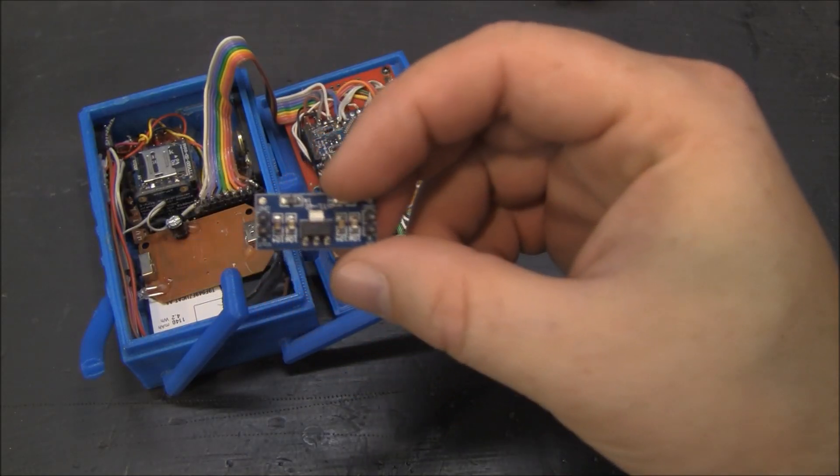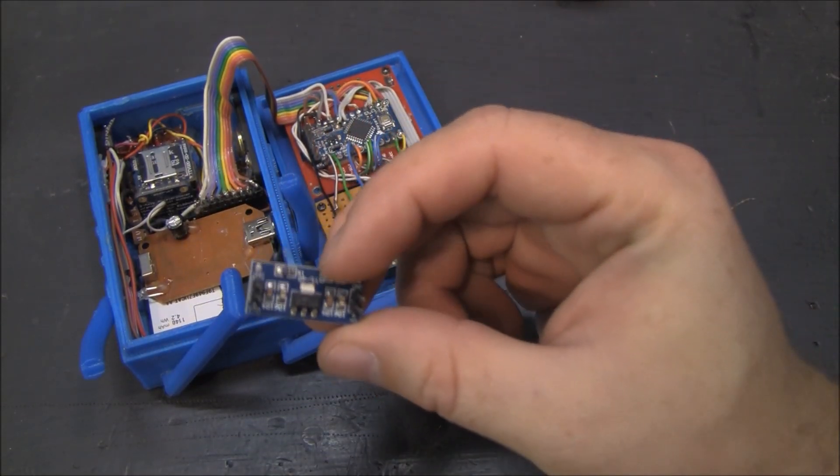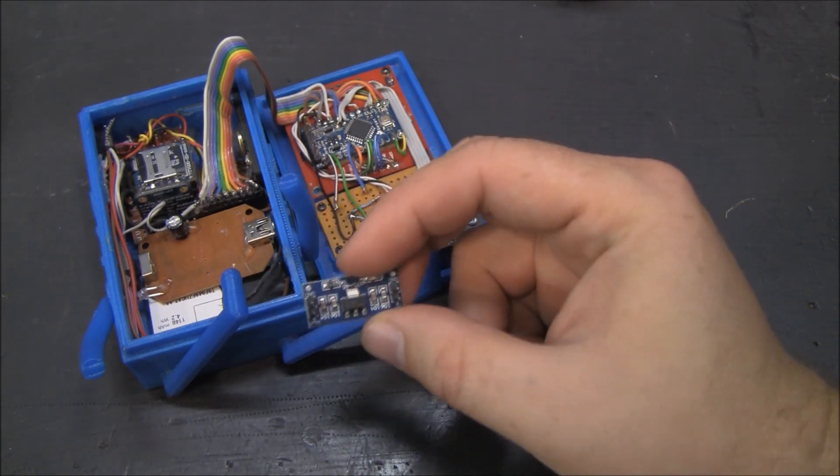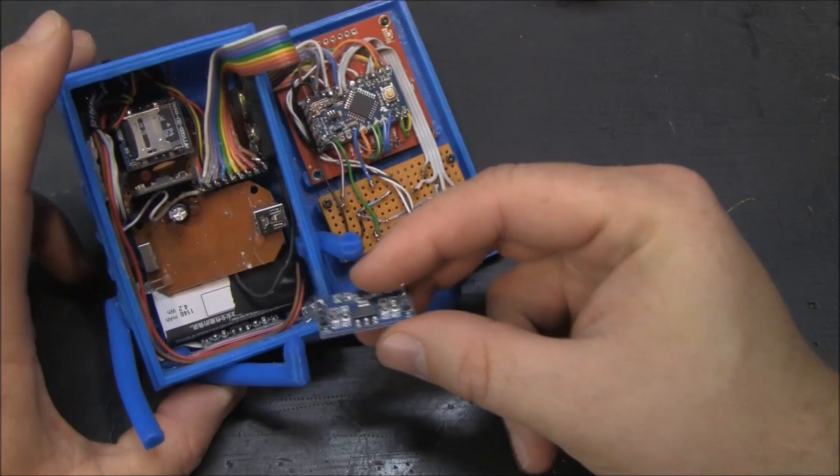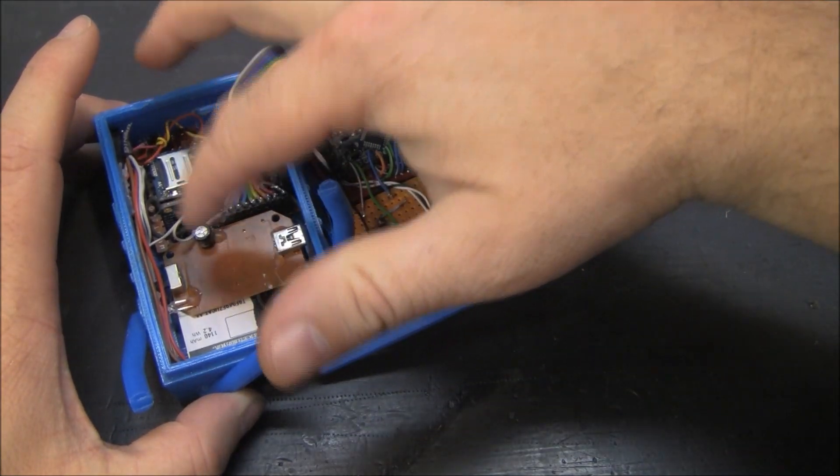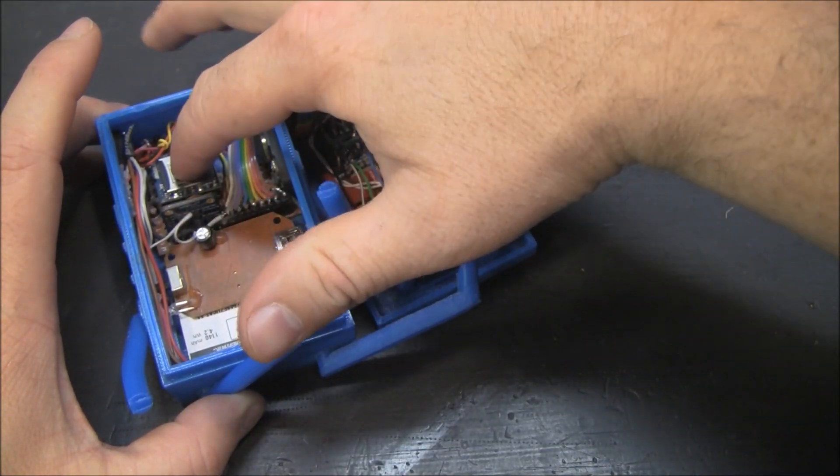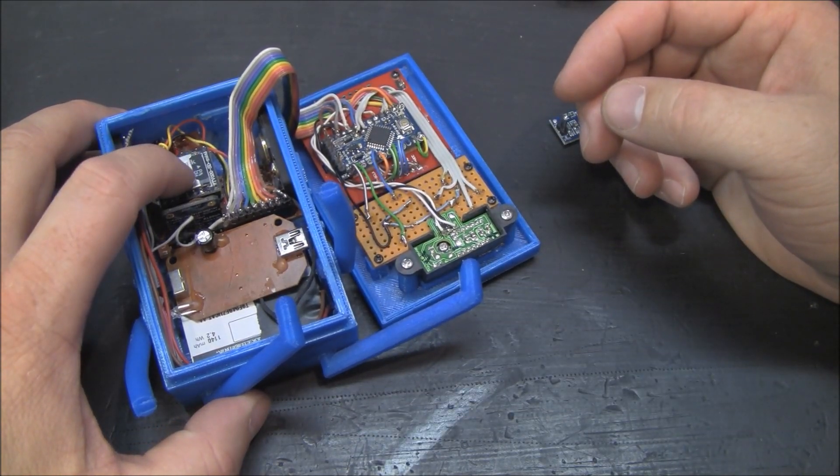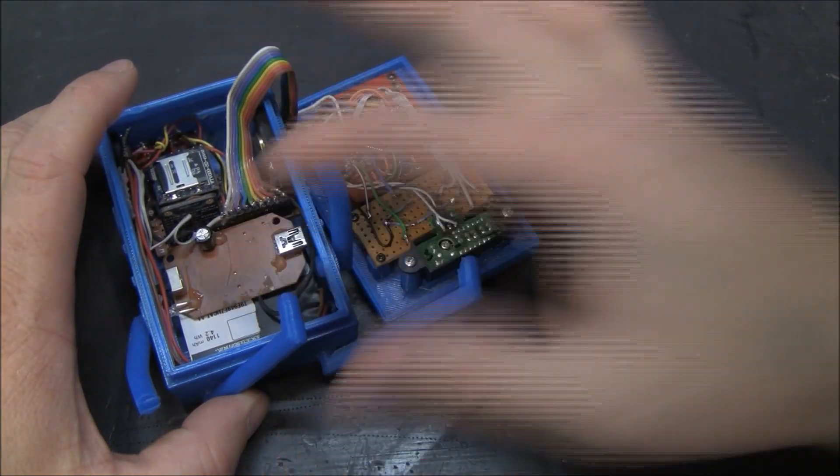These little regulators are pretty slick. They are a couple dollars on eBay, so pretty affordable. So that's what's running 3.3 volts for my accelerometer and for the music player and the amplifier.